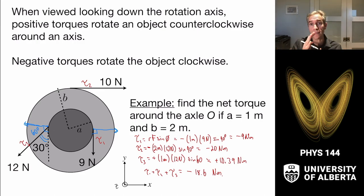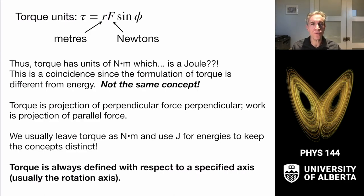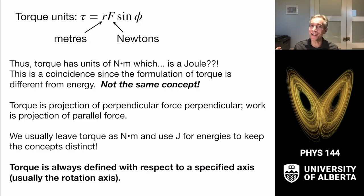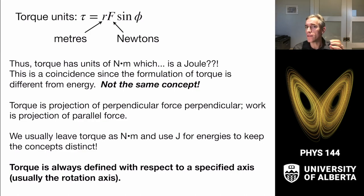The unit is newton meters, which falls out of the equation: moment arm in meters times force in newtons, with the sine having no units. This is also a joule, but we keep the units distinct — calling torque newton meters and energy joules — because they are not the same concept. Torque is the component of force perpendicular to the moment arm, while work is the projection in the parallel direction, making them very distinct concepts.